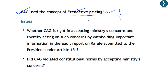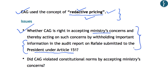This raises two issues: first, whether the CAG was right in accepting the ministry's security concerns and withholding important information in the audit report submitted to the President under Article 151; and second, whether the Comptroller and Auditor General violated constitutional norms by accepting the ministry's concern. These are precisely the two questions before the Supreme Court — whether it was correct for CAG to use the redactive pricing method.